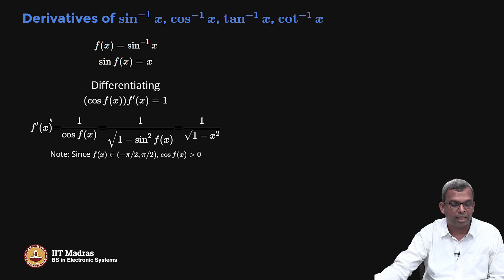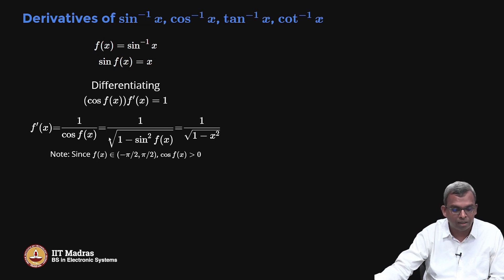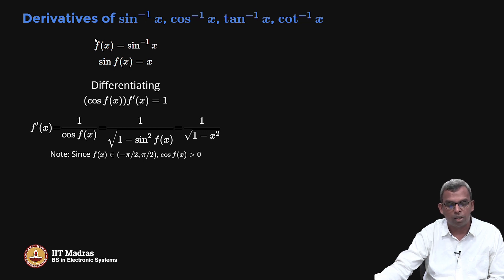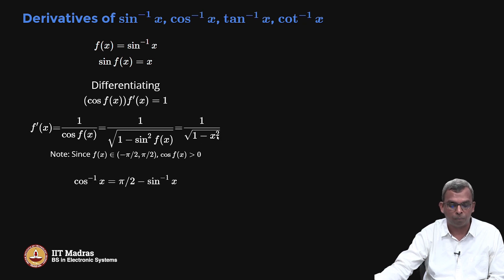Using this trick, we get that the derivative of sin inverse of x is 1 by root of 1 minus x square. But you have to pay some attention here — when you take the square root, should you take the positive or negative square root? f of x is between minus pi by 2 and pi by 2, and in that range cosine is greater than 0. So you have to take the positive square root, and it works out as 1 by root of 1 minus x square.